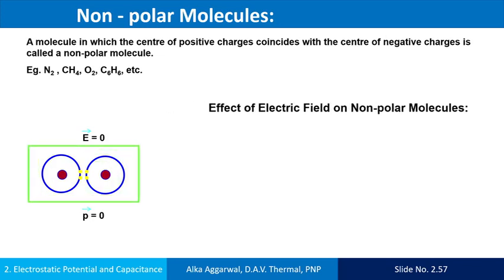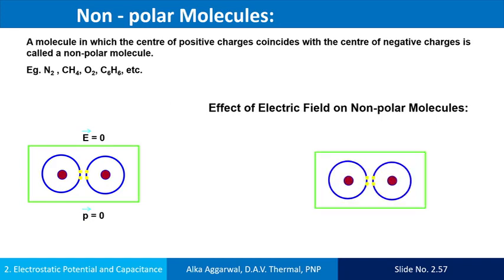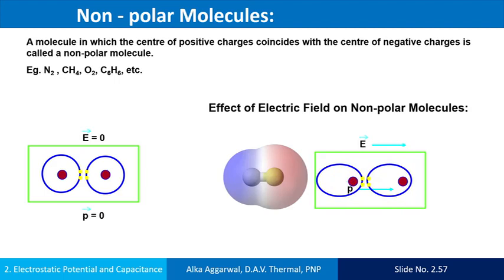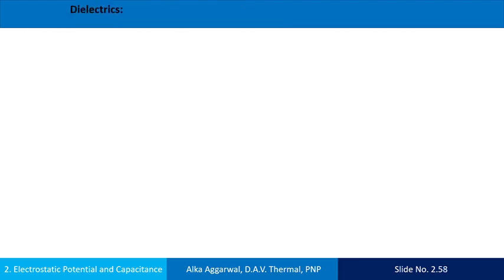Effect of the electric field on nonpolar molecules. When an electric field is applied, the positive charges are pushed in the direction of the applied field and electrons are pulled in a direction opposite to the electric field. Due to the separation of the centers of the positive and negative charges, a dipole is formed. That is, the center of positive charge separates from the center of negative charge, and in the electric field it has dipole moment.